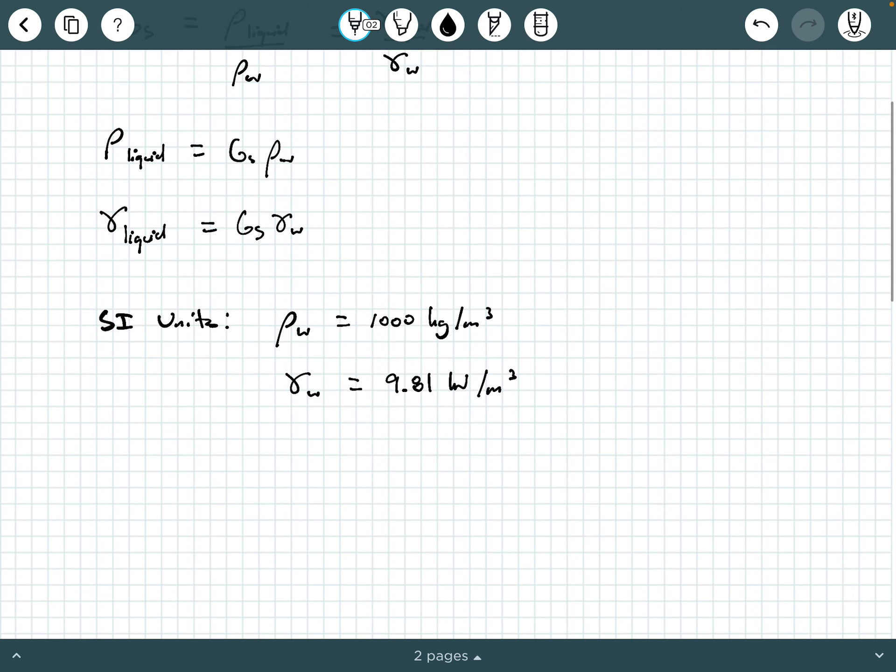So let's go ahead and calculate the density and unit weight of our liquid in SI units. The density of our liquid is going to be g sub s times rho water, and that's just 0.81 times 1,000 kilograms per meter cubed. And here we end up with 810 kilograms per meter cubed. That's one of our answers.